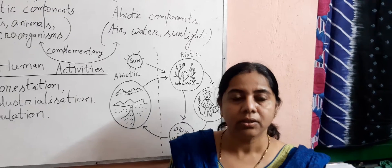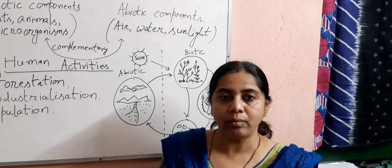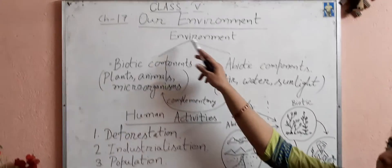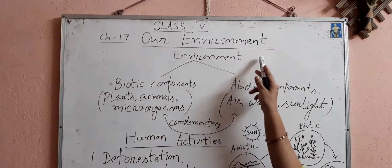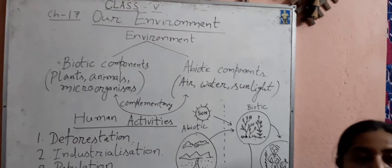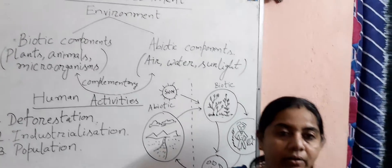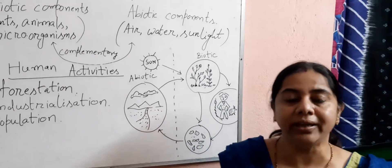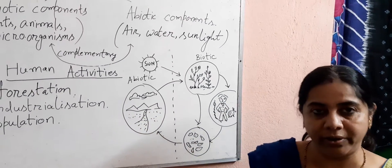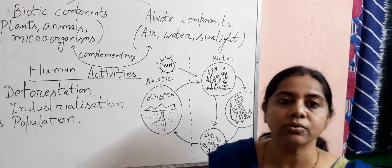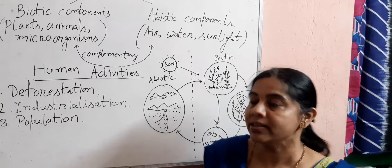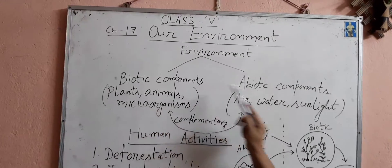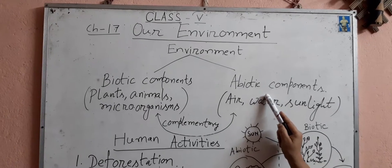Hello students, today I am going to start the chapter of our environment. Let us study what is environment. The surrounding of an organism is known as environment. There are two types of components in an environment — biotic components and abiotic components.